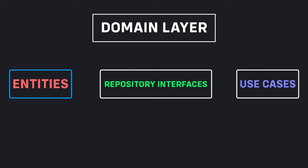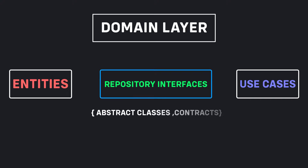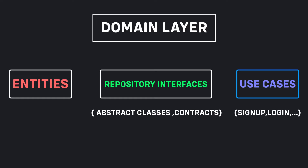In other words, our entities are the objects that can be returned to us or we can send to an API. Repositories in the domain layer are abstract classes or contracts, and define the properties and methods that our project will need in a specific feature. Use cases include application-specific business rules. Each event is an interaction of the user with the system — we can call this a use case, like signup, login, and other interactions. Use cases are nothing more than a bridge between layers; it's a single call to business logic.